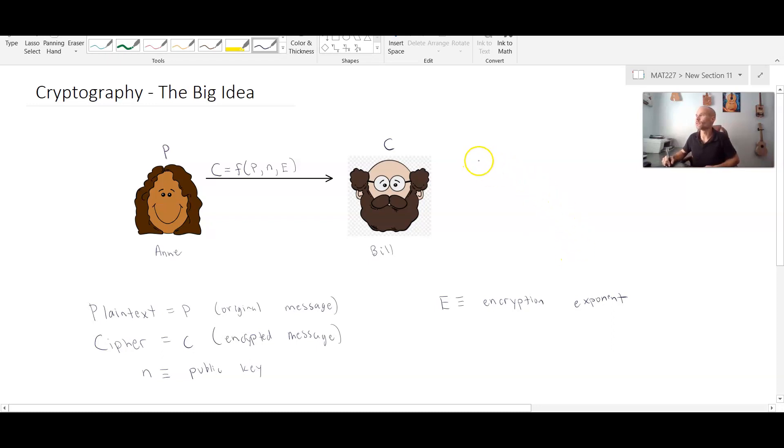So what Bill is going to have to do is he's going to have to apply some sort of function which we will call f inverse. And remember, this just means that it's not f to the negative one, it's just it's going to undo what f did. So he is going to have to input that cipher text value as well as two other values, one of which is called b, and we'll define that in a second, and the other that is called d.